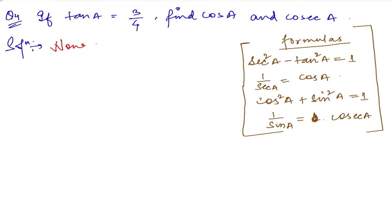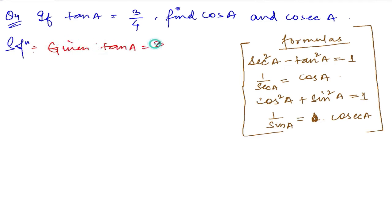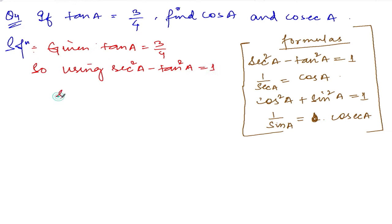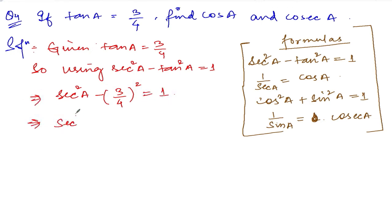Given: tan(a) = 3/4. Using sec²(a) - tan²(a) = 1, we can write sec²(a) - (3/4)² = 1, which gives sec²(a) - 9/16 = 1.